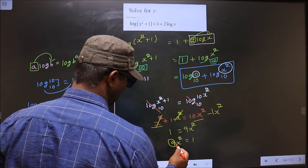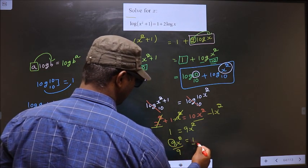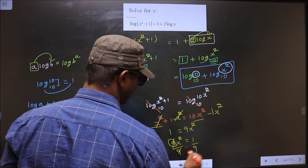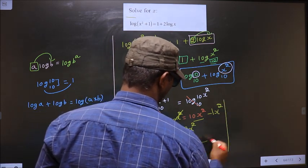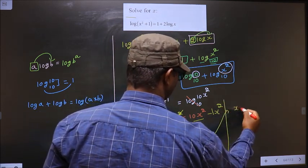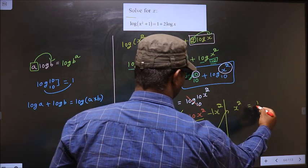Now we should remove 9. To remove 9, you divide by 9. Here it cancels out. We get x² = 1/9.